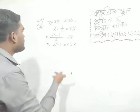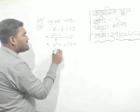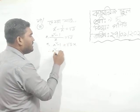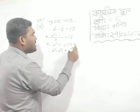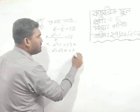Let's go to the problem. Click here. x squared plus 2 to the minus and a minus 2 to the minus plus.